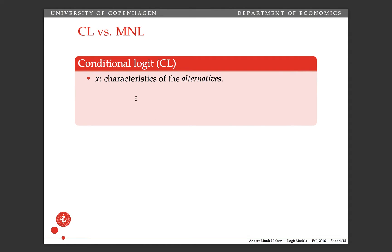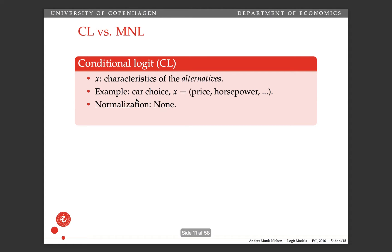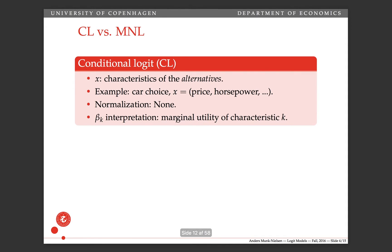In conditional logit, the x's are the characteristics of the alternatives. An example is car choice, where x would be price and horsepower. There's no normalization in this model, but we cannot include an intercept in x — we'll discuss why in class. The interpretation of betas is that it's the marginal utility of each of the characteristics.